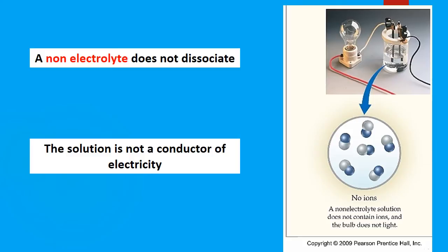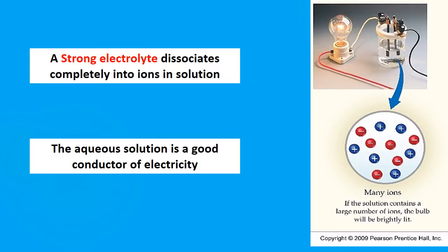A non-electrolyte does not dissociate, and the solution is not a conductor of electricity. There are no ions — only compounds — so the bulb does not light. A strong electrolyte dissociates completely into ions when in solution. All species are broken apart into positively and negatively charged ions — no neutral compounds remain. So the aqueous solution is a good conductor of electricity, and the bulb lights brightly because there are many ions.